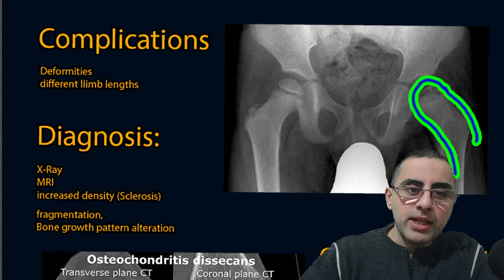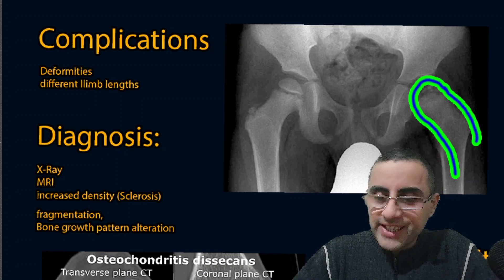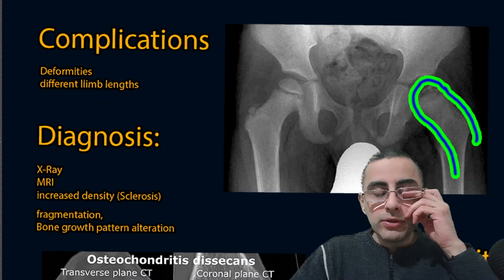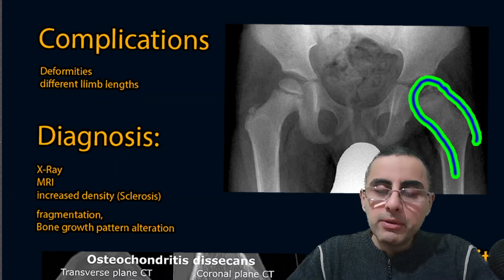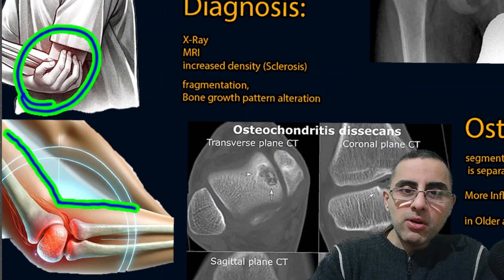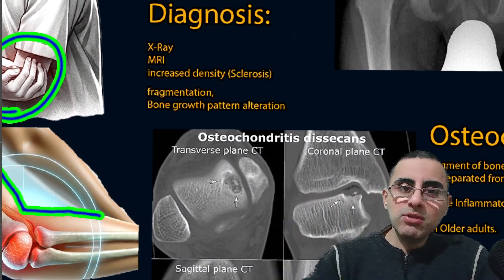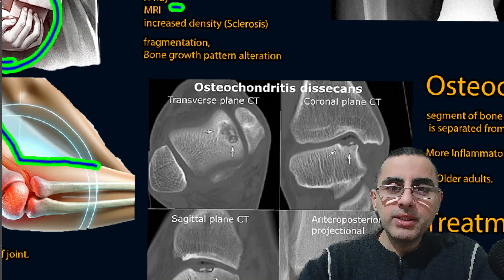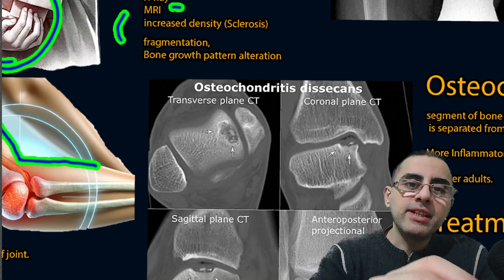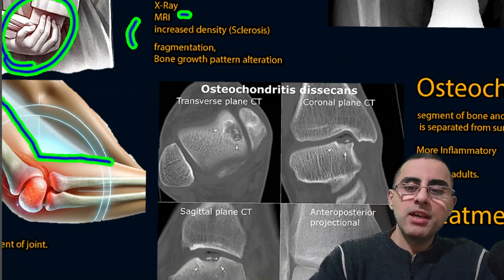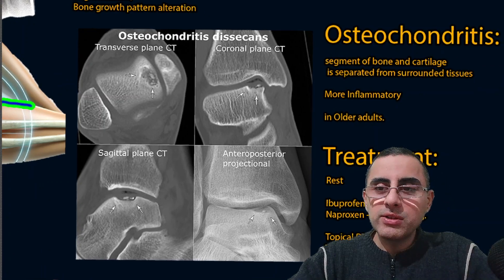Osteochondrosis is important because if left untreated it can cause deformities of the bone and different lengths of limbs. That is why early diagnosis and treatment are important. Diagnosis is usually based on symptoms, but X-ray and MRI are also informative. They can show increased bone density, which means sclerosis, or fragmentation, or alterations in bone growth pattern.